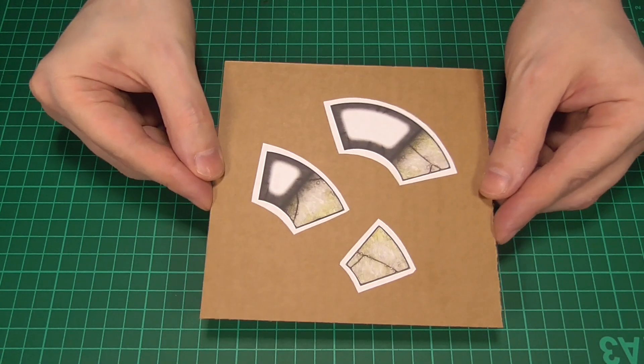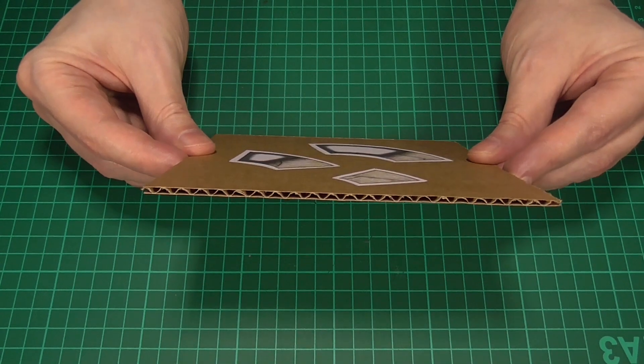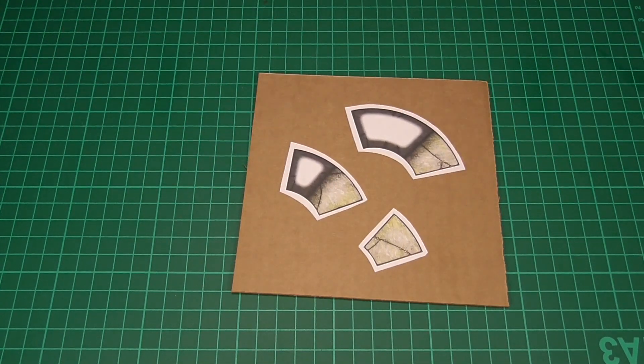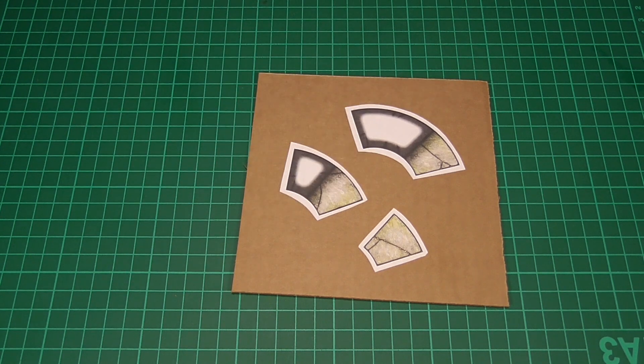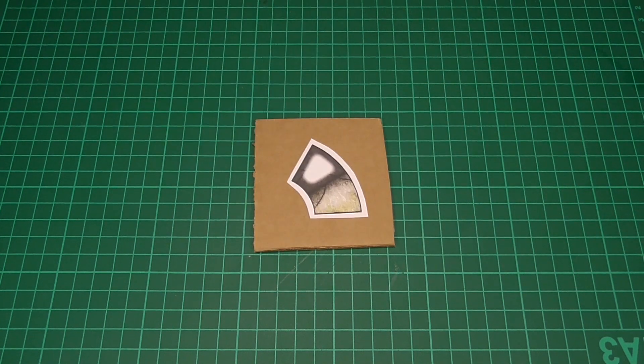So the first thing we're going to do is glue the three step textures to some thick or corrugated card. And to do that, we'll just use a regular glue stick. And we'll give those a few minutes to fully dry. So to speed things up, here's one that's already dry.